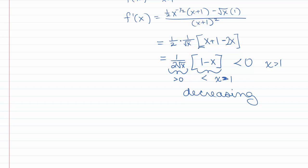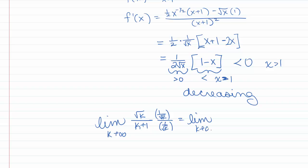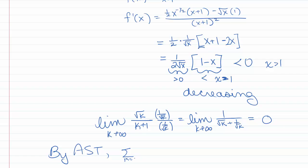We want to check that it goes to 0. We divide everything through by 1 over square root of k and get the limit as k goes to infinity of 1 over square root of k plus 1 over square root of k, which goes to 1 over infinity plus 0, so that is 0. So it is going to 0. And so by the alternating series test, the sum k goes from 1 to infinity of negative 1 to the k times square root of k over k plus 1 converges.